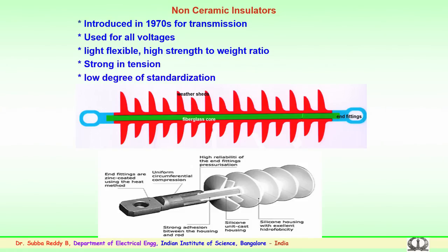Non-ceramic insulators were introduced in the 70s particularly for transmission because of their advantages. Many industries started business in polymeric or composite non-ceramic insulators, intended for use at all voltages. The main advantages are being very light in weight, flexible, and having a high mechanical strength-to-weight ratio. These insulators showed strong potential and also a low degree of standardization, providing advantages for both manufacturers and utilities.